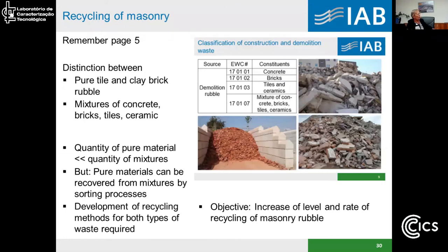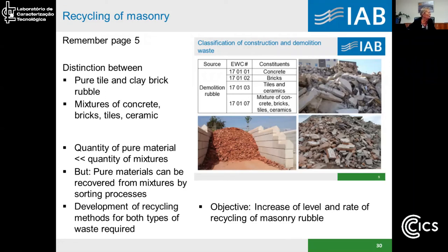Now the last point: the recycling of masonry — a shorter point. We have two types of masonry rubble: first type is pure tile and clay brick rubble; second type is a mixture of concrete, brick, tile, ceramics, and so on. The amount of pure material is very low compared with the amount of mixtures. With sorting technologies we can recover pure materials from these mixtures. Therefore we need developments for both types of waste — for the mixtures as well as for the pure materials. The objective is clear: to increase the level and rate of recycling of masonry rubble. So far, masonry rubble can only be used for filling or it goes to deposit.